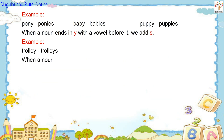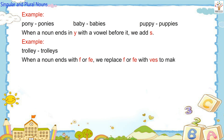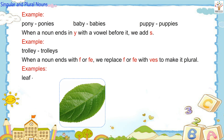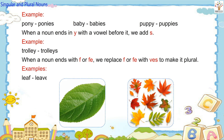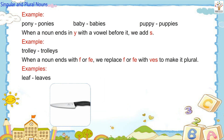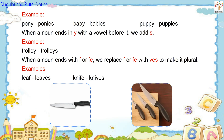When a noun ends with F or FE, we replace F or FE with VES to make it plural. Examples: Leaf — Leaves, Knife — Knives.